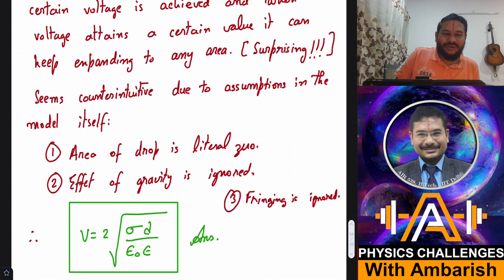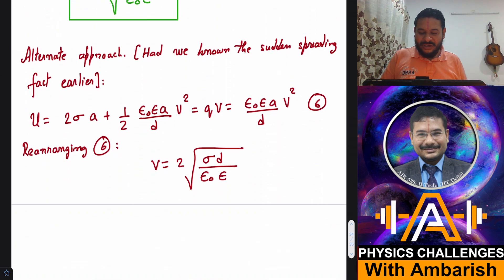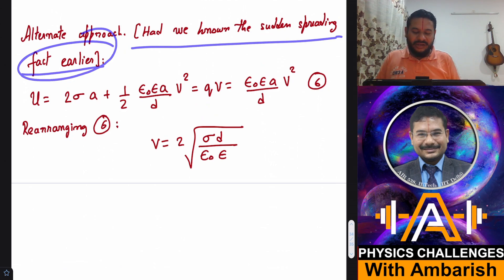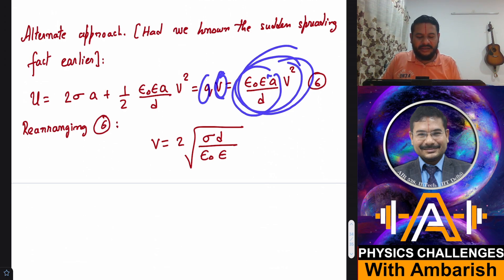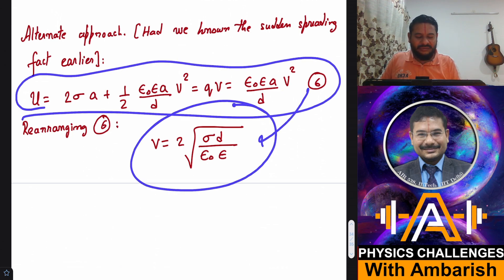Now, had we known the process a priori, suppose we already knew that this is going to happen, that voltage keeps on increasing, nothing happens. And then at certain voltage, the drop just begins to spread and it can spread to just about any area. Had we known that in the beginning itself, then we could have done this in a single equation also. So now I will tell you the second solution of this problem. What's the second solution? Alternate approach. Had we known the sudden spreading fact earlier, then I could just write total stored energy is 2 sigma A plus half CV square, right? So total stored energy should be equal to total work done by the battery. But then battery supplies charge at a constant voltage. Once you achieve V, then all the charge is supplied at that voltage itself. So this itself is the work done by the battery. So QV and this should be equal to work. Q is then C into V and CV into V becomes CV square. And from this single equation itself, if you rearrange, you straight away get the value of voltage.